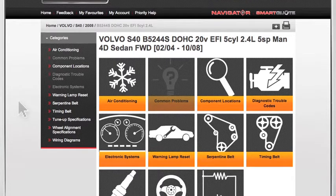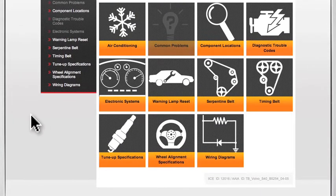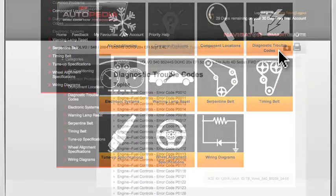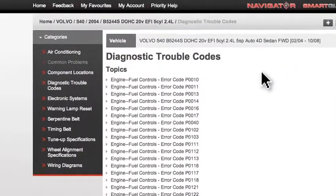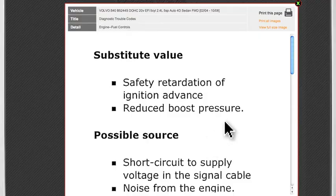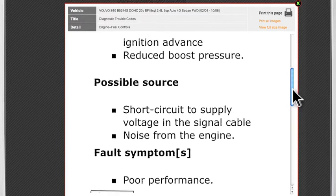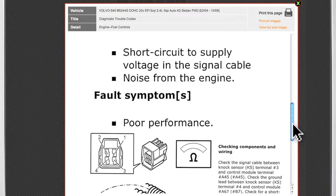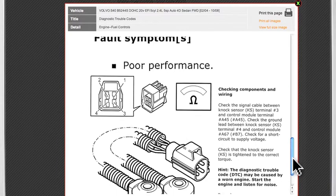Now let's see how Autopedia can help you sort out trouble code problems. Troubleshooting diagnostic trouble codes is as simple as clicking on the diagnostic trouble codes icon and selecting the relevant code from the available list. These OEM diagnostic flowcharts are the same information that dealerships use to guide them step-by-step through diagnosing the problem.